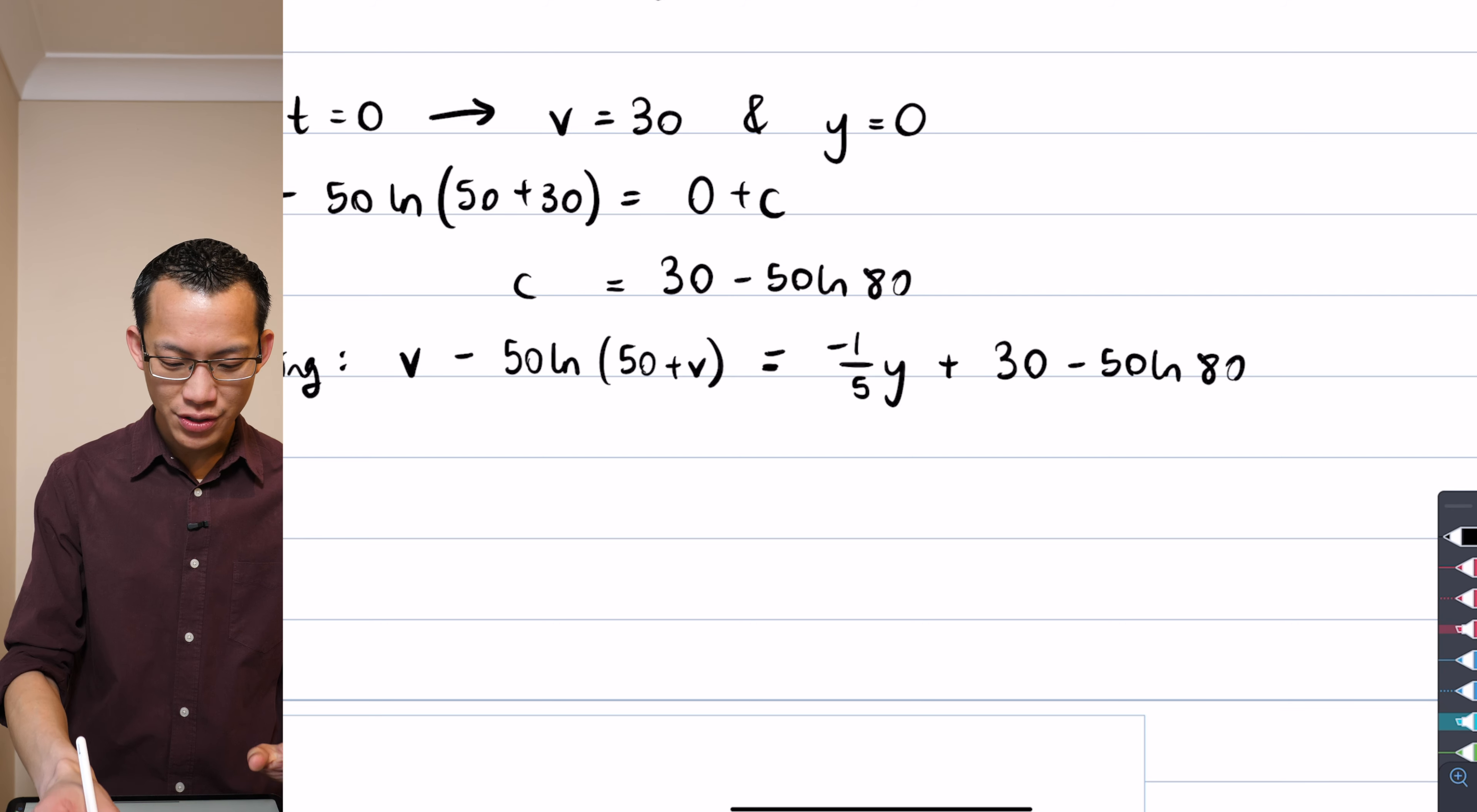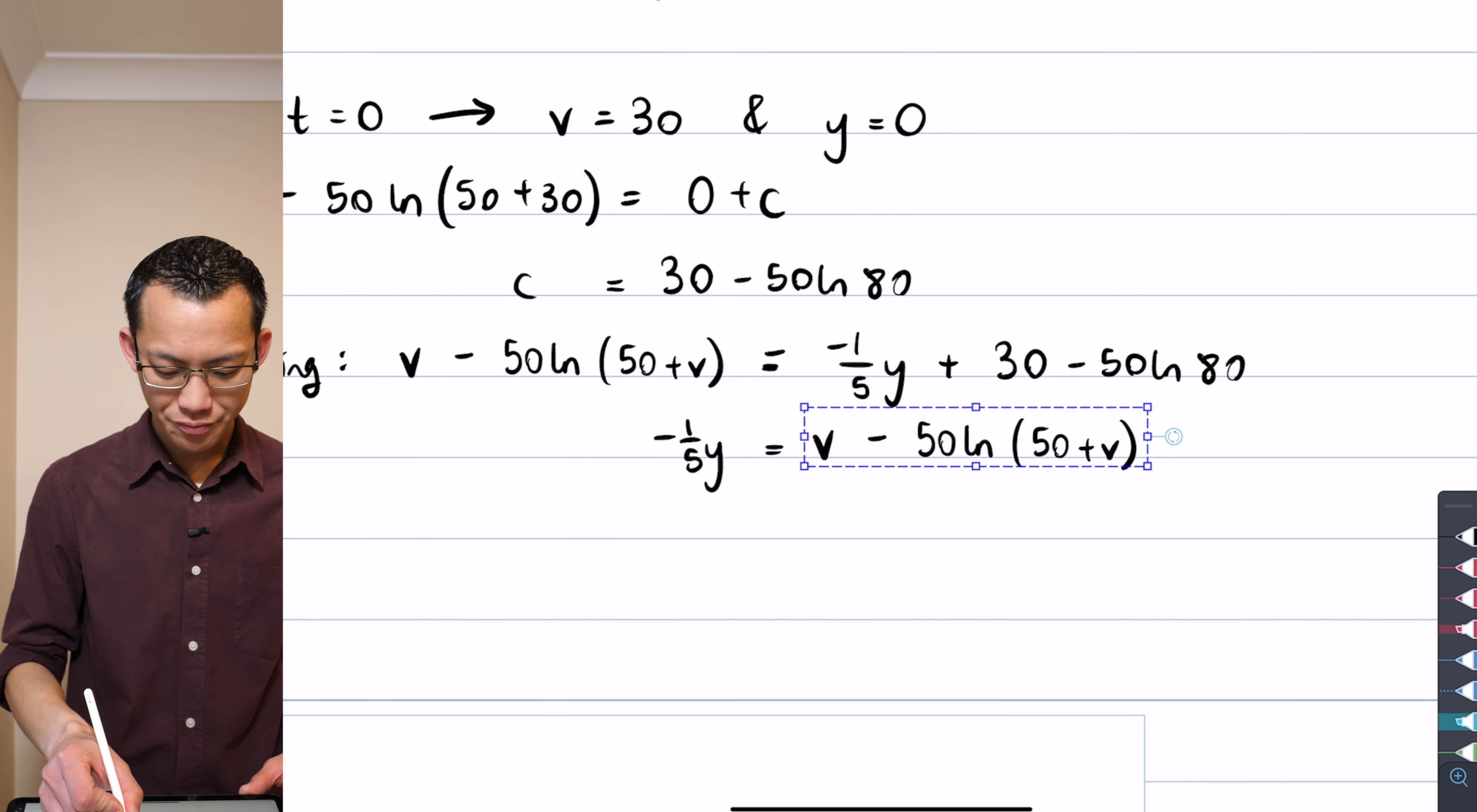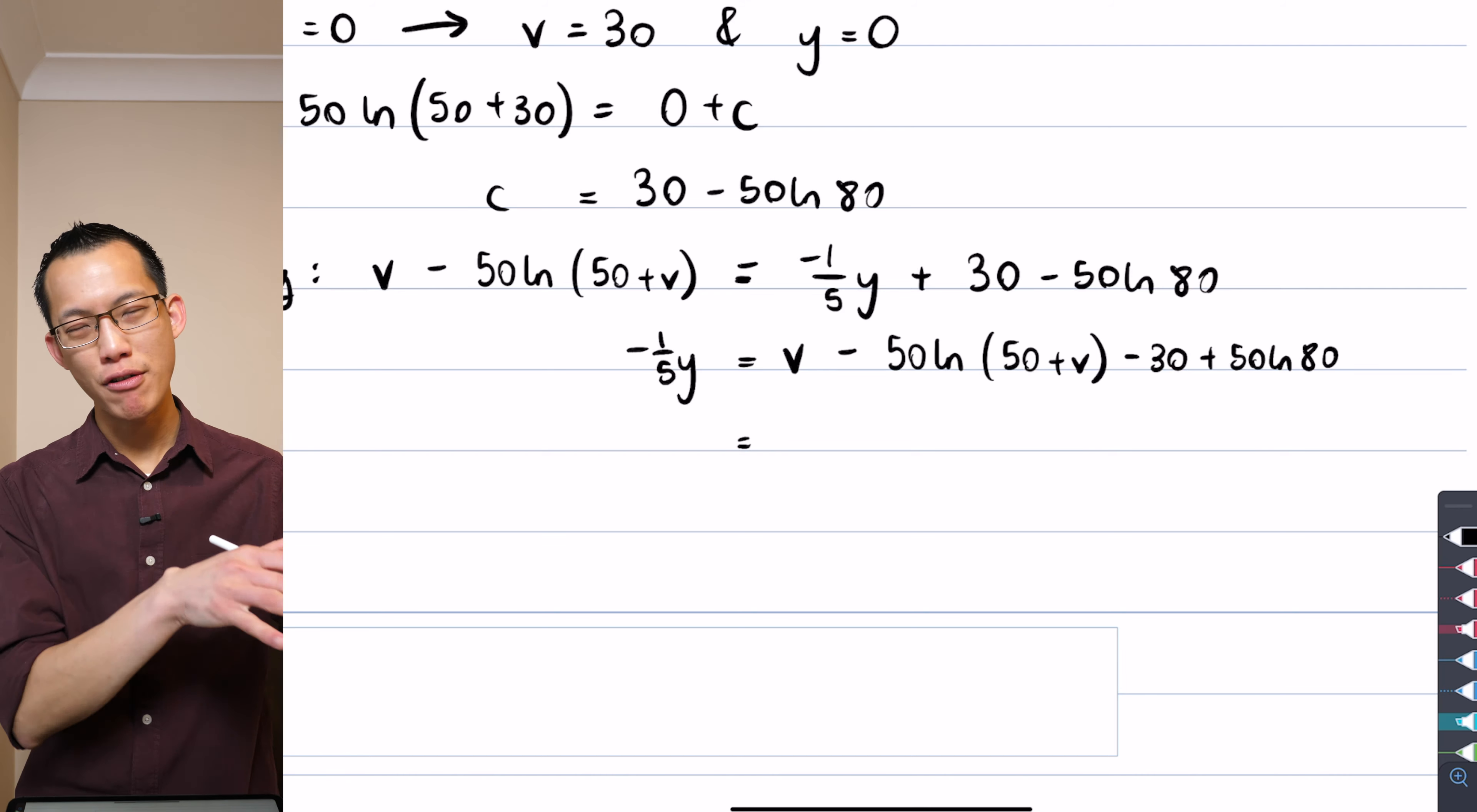So I'm going to subtract all of this from both sides because that'll make minus a fifth y the subject. So if I make that the subject I'm going to get this duplicate over there, and then what I'm going to do is I'm going to subtract this constant, so minus 30 plus 50 log 80 over there on the right hand side. You can see all my signs have switched around.